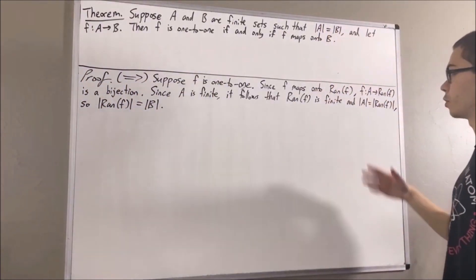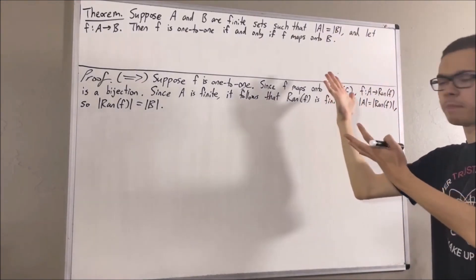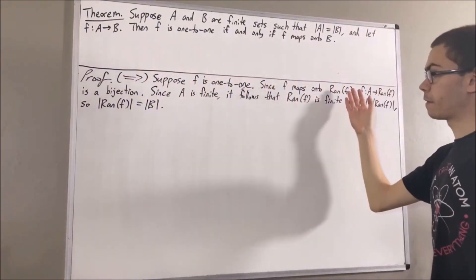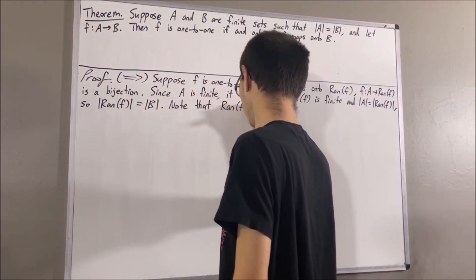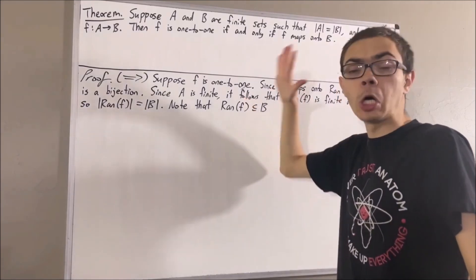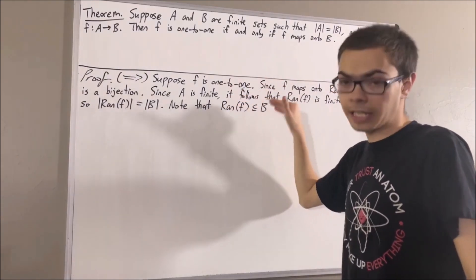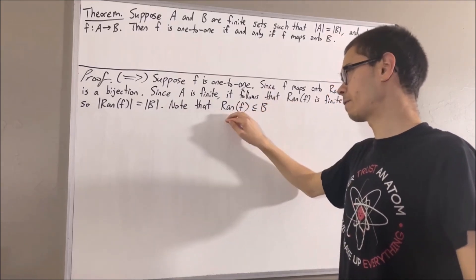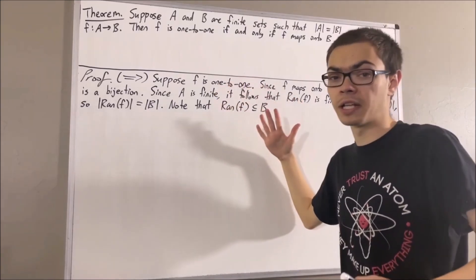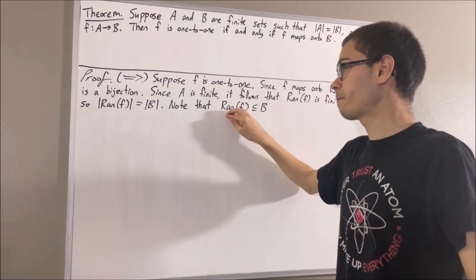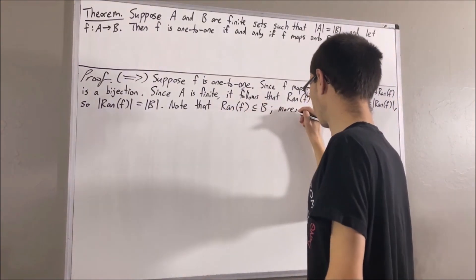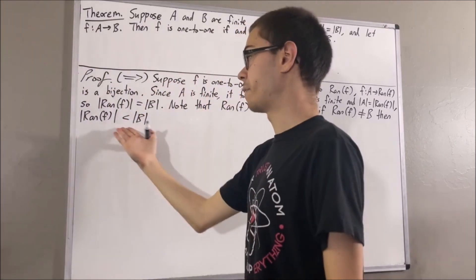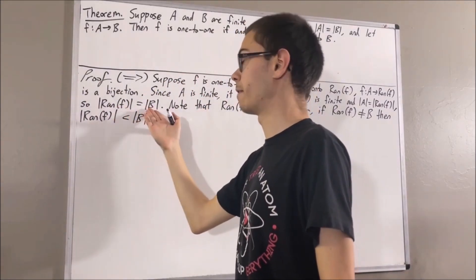Now, the range of F is a subset of every possible codomain that F could have. So in particular, the range of F must be a subset of B. But moreover, if we also have that the range of F is not equal to B, then the range of F is a proper subset of B. And since the range of F and B are finite, that would tell us that the cardinality of the range of F is strictly less than the cardinality of B.